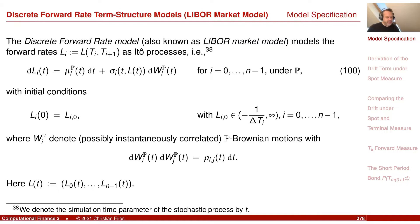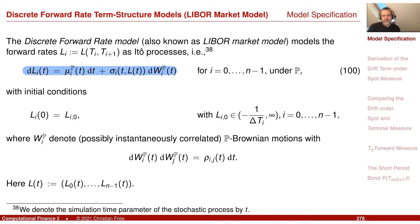So this is our model. We model each forward rate as an Itô process, assuming some local volatility function — the parameter sigma — and the Brownian motions are allowed to have correlation. This will be important later when we talk about the efficient implementation of the drift.